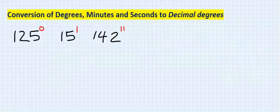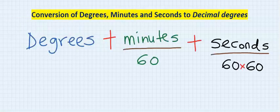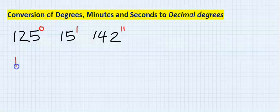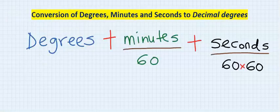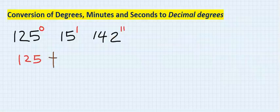Let's convert this DMS to decimal degrees. The first step is I'm going to apply this formula. That is 125, which is the degree, plus this minute we divide by 60. Hence I will have 15 divide by 60.